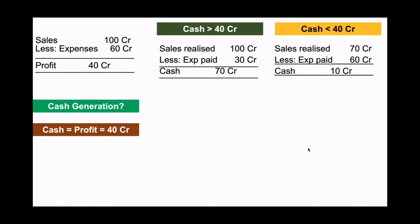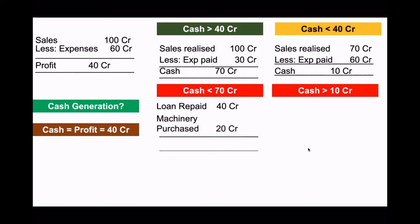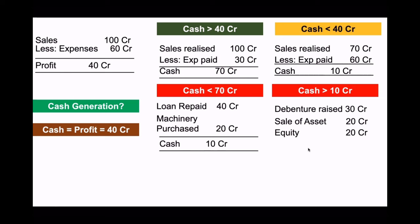These positions can also undergo further change. The 70 crore cash can come below 40 crore and the 10 crore cash can go above 40 crore. For example, if a loan of 40 crore has been repaid and machinery purchased for 20 crore, then out of 70 crore, 60 crore has gone out and cash is only 10 crore. In the second scenario, if a debenture of 30 crore is raised, an asset is sold for 20 crore, and equity money of 20 crore comes in from owners, that's 70 crore coming in.